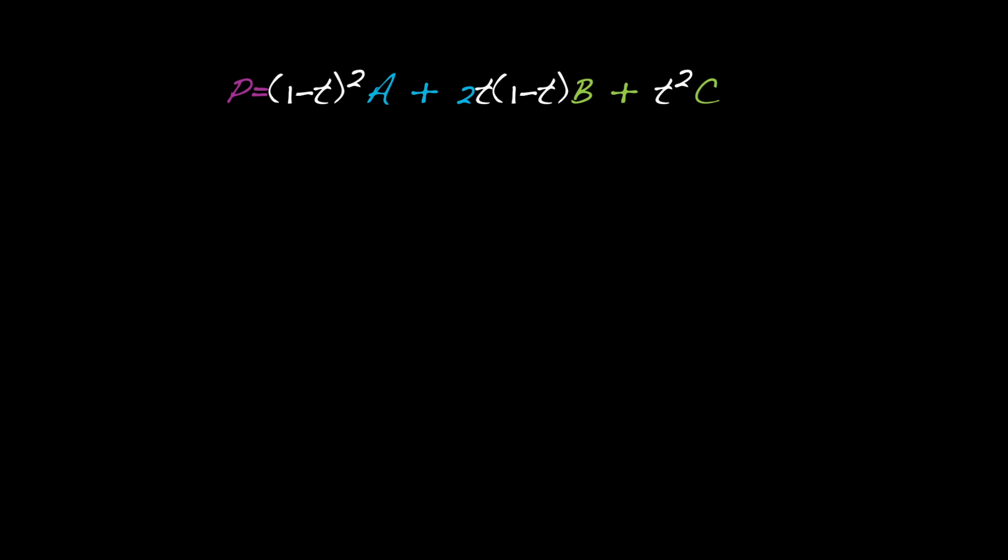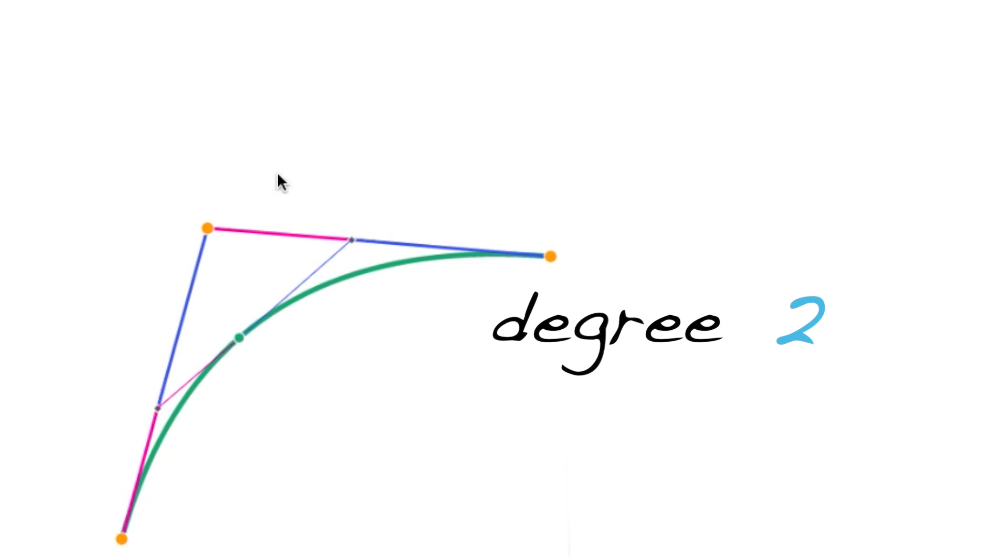All those squared terms show us that P is actually a degree 2 polynomial. Interesting, a three-point polygon leads to a degree 2 polynomial. That kind of makes sense because we did two stages of linear interpolation.